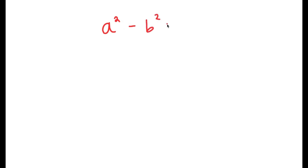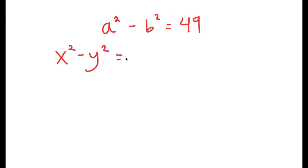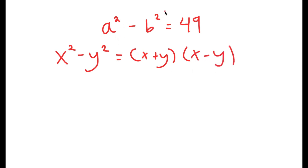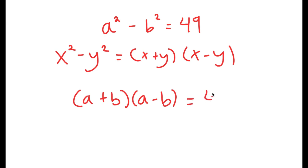In this video, I'm going to solve the equation a squared minus b squared is equal to 49. To solve this, I'm going to use the property that states if I have something in the form x squared minus y squared, this is equal to x plus y times x minus y. In this case, a is x and b is y, so this turns into a plus b times a minus b is equal to 49.